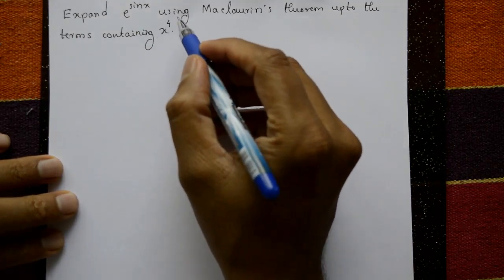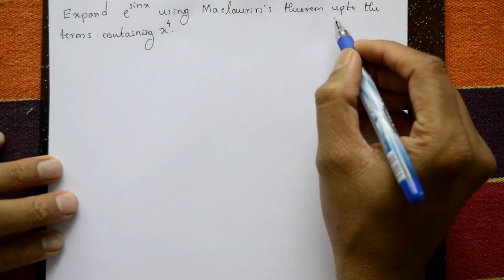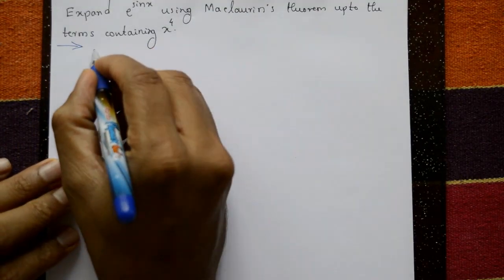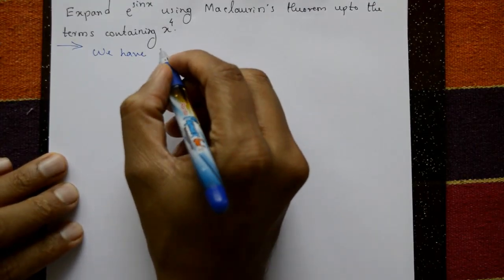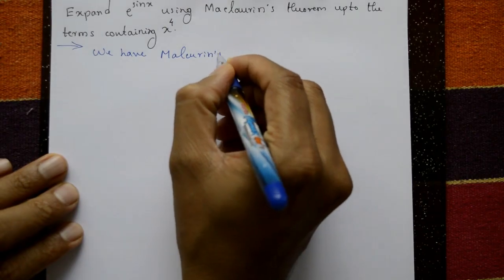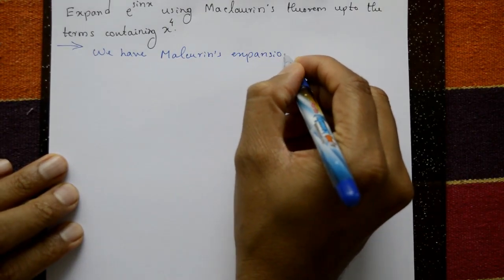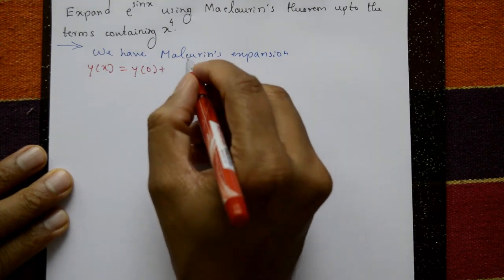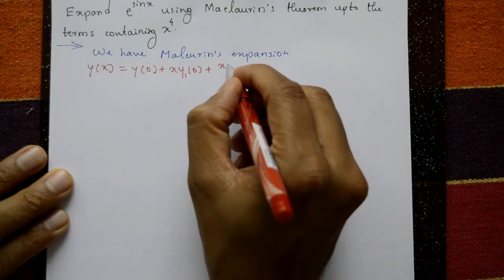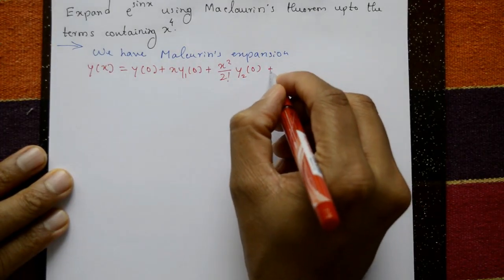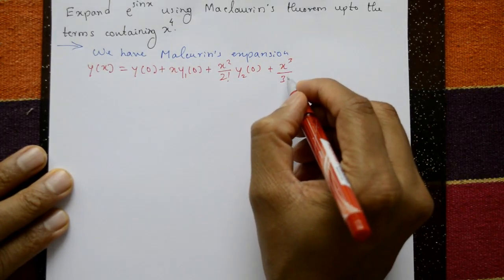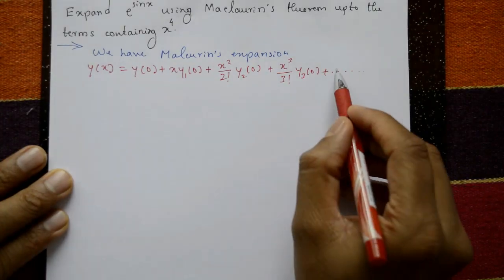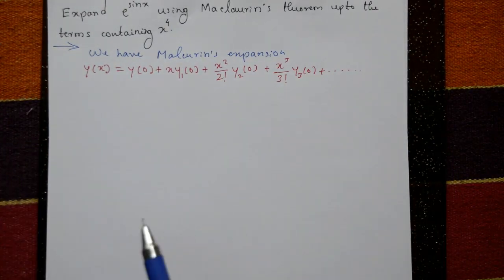Expand e raised to sin x using Maclaurin's theorem up to the term containing x raised to 4. The Maclaurin's expansion is: y(x) = y(0) + x·y1(0) + x²/2! · y2(0) + x³/3! · y3(0) + and so on up to the term containing x to the 4.